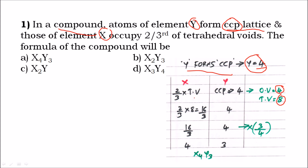Once we get this, see the next information: X occupies two-thirds of the tetrahedral voids. Tetrahedral voids equal eight, so X equals two-thirds of eight, which is sixteen by three. Y is directly given as four. But we can't write as a fraction, so we need to convert to a whole number.